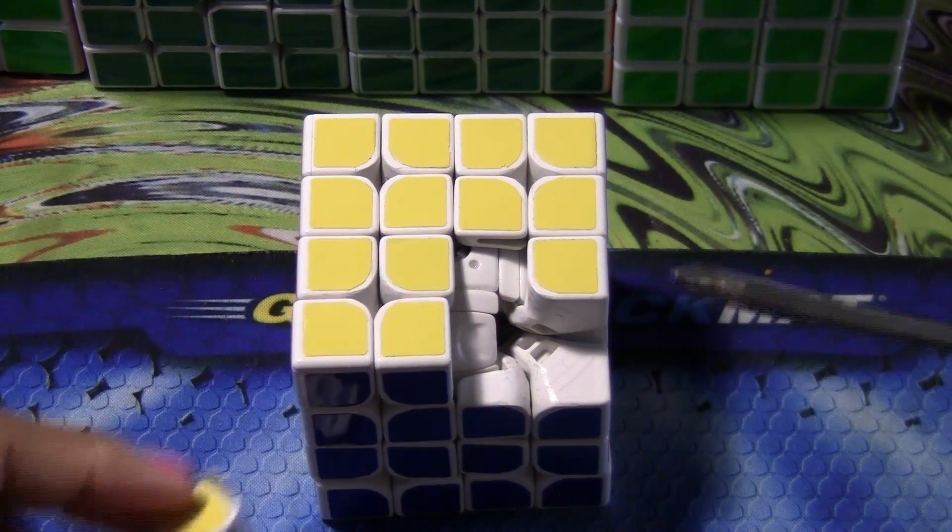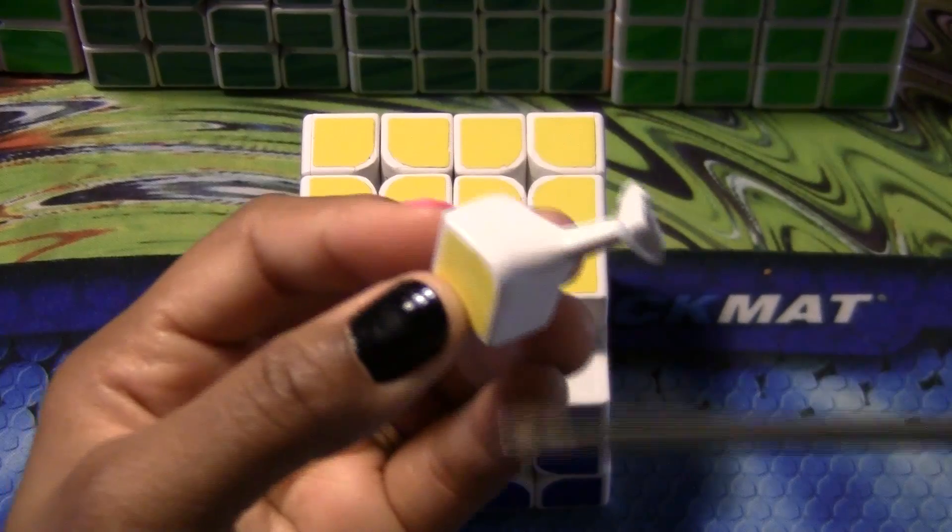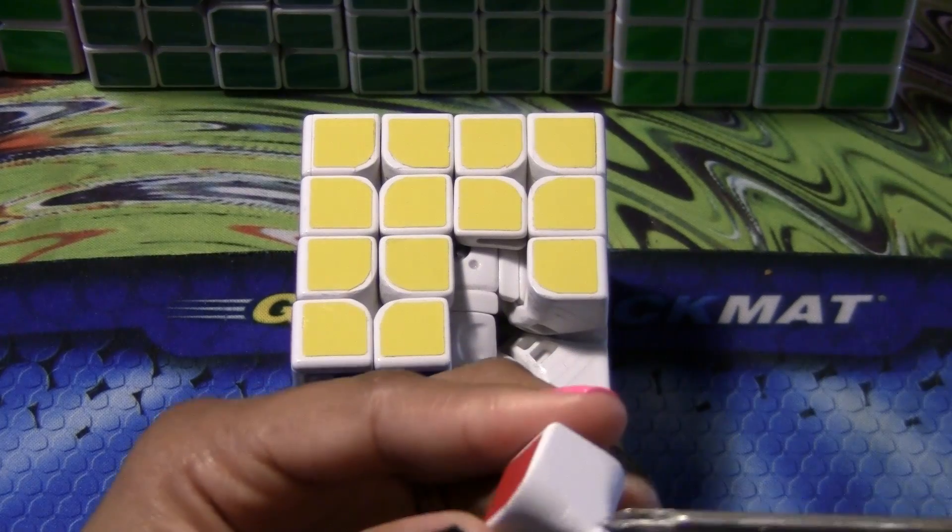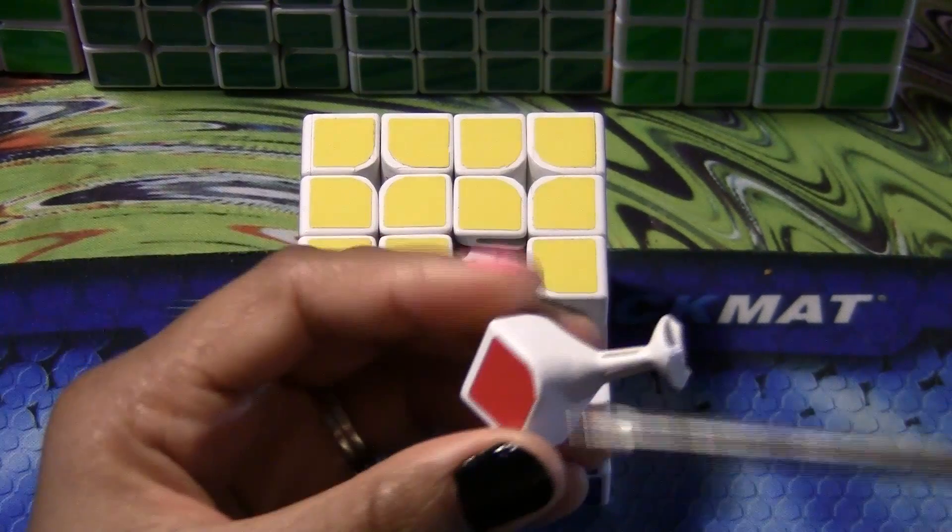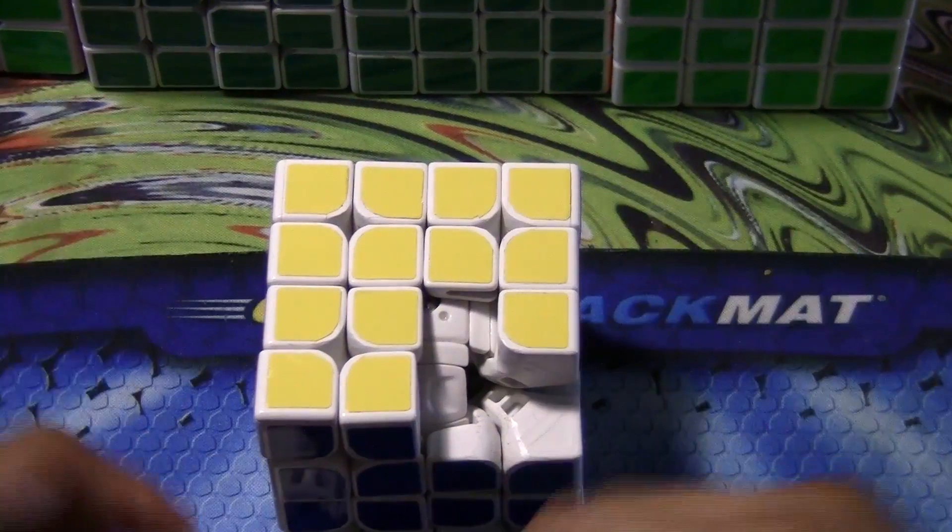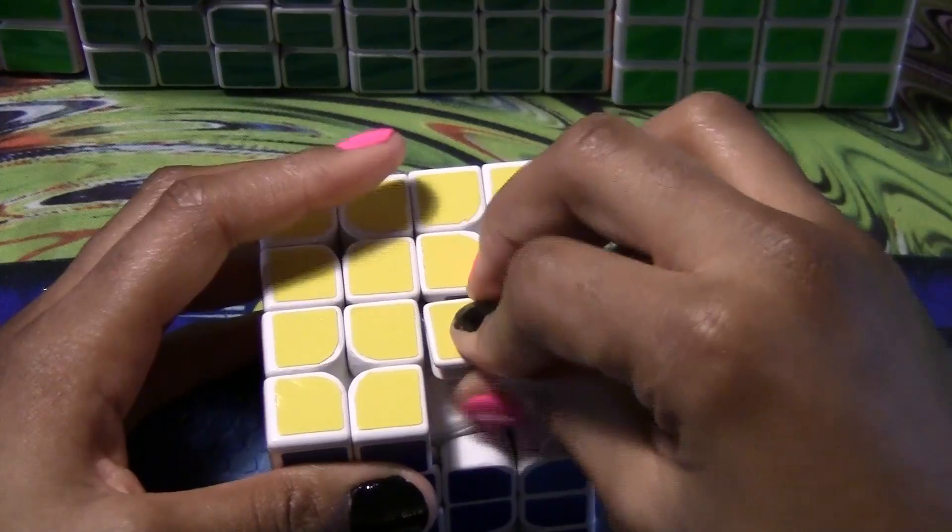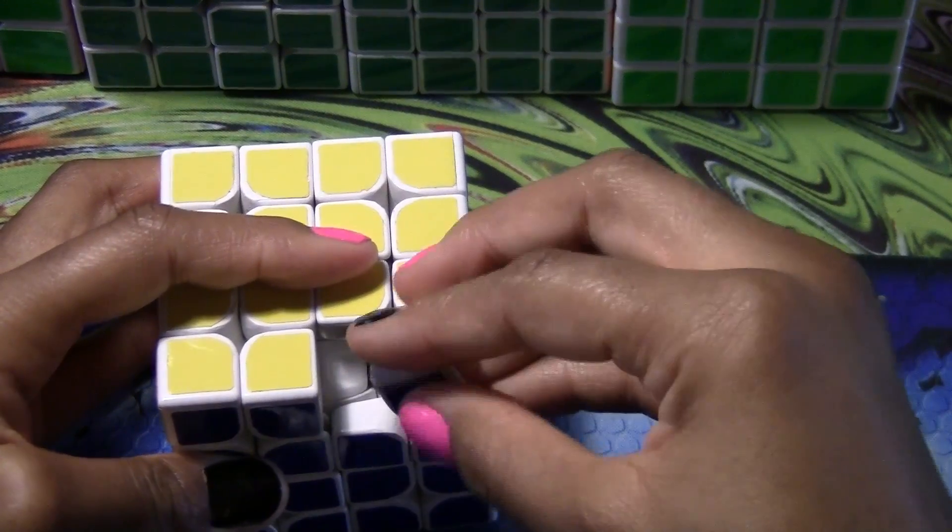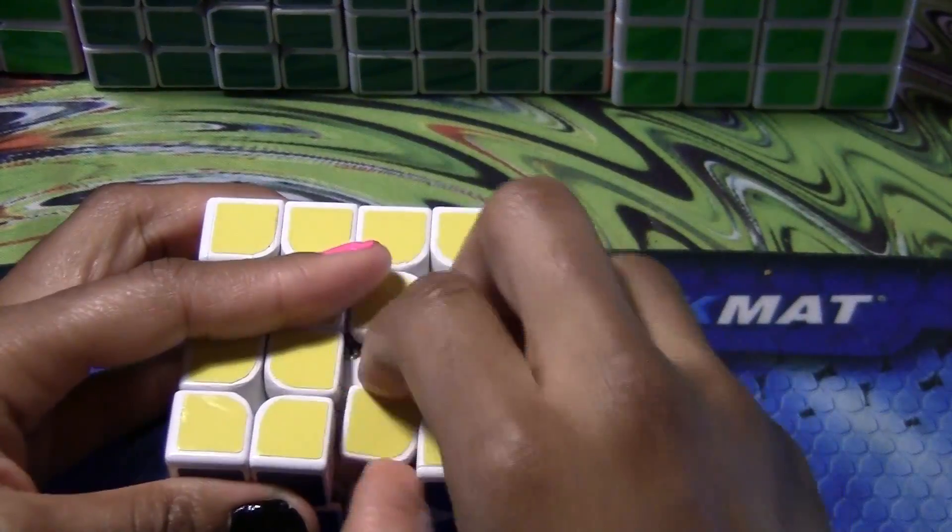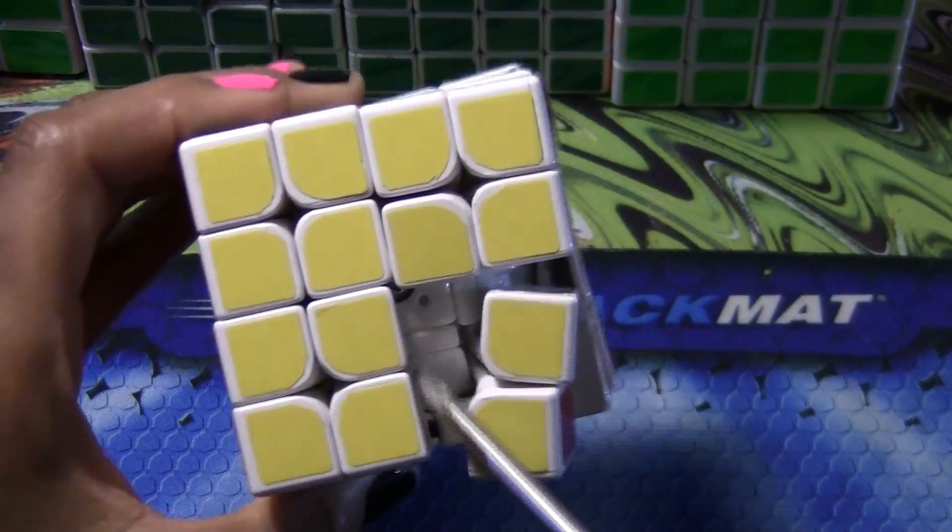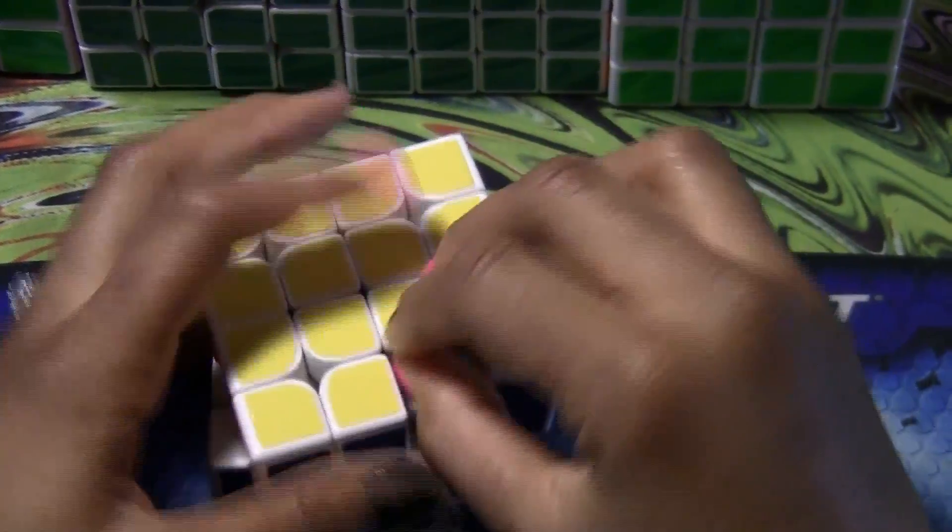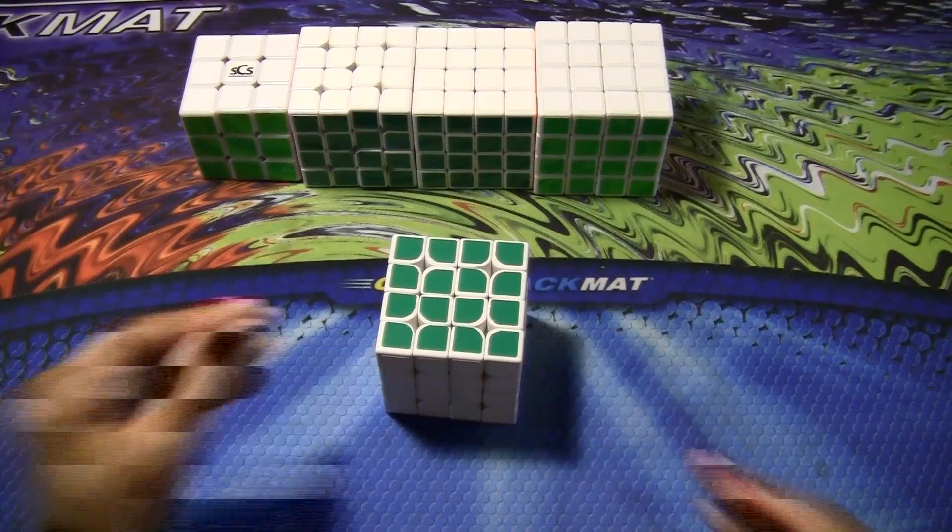For corners, they rounded off right here and here and I think here. I'm not sure if they did... this is the Florian mod that they did to the puzzle. I think they said they did a full Florian mod on this. I'm not sure if they did the Konsta mod. Konsta mod is where you mod these inner pieces. If they did, it's just a little bit.